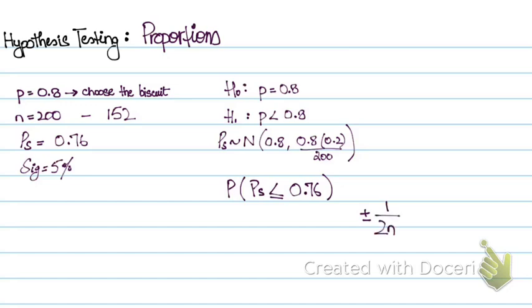So since it's less than equals to 0.76, this can also be written as less than 0.77, which means that I will add 1 upon 2N. So this will in fact become probability of P less than 0.7625.